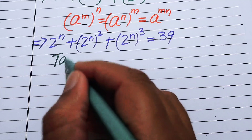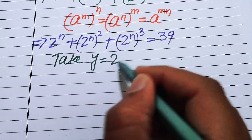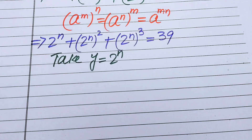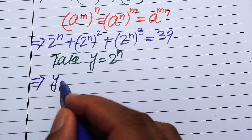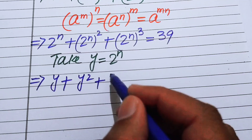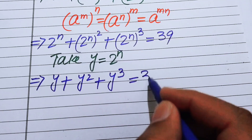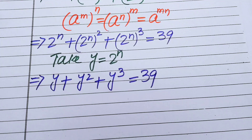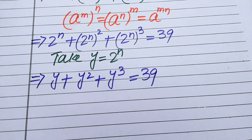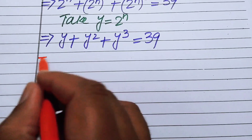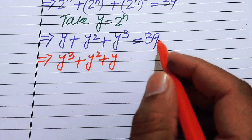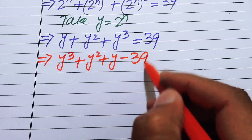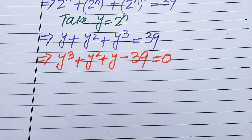We let y equal 2 to the power of n. Substituting, the equation becomes y plus y² plus y³ equals 39. Rearranging, we write this as y³ plus y² plus y minus 39 equals 0.